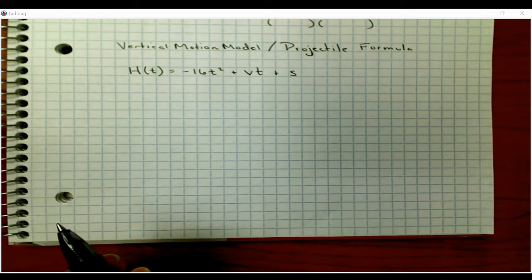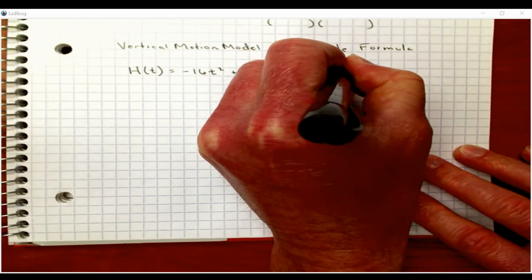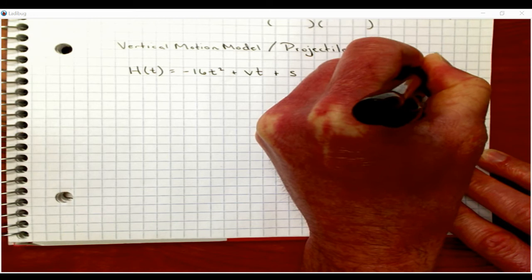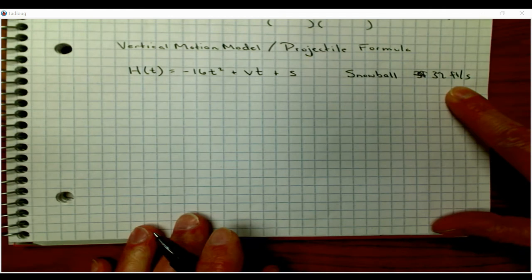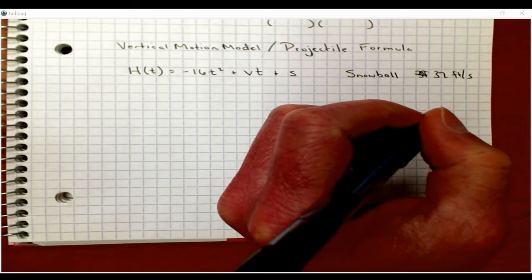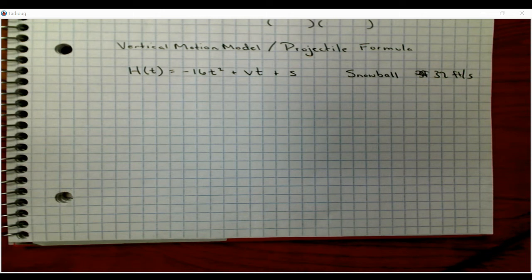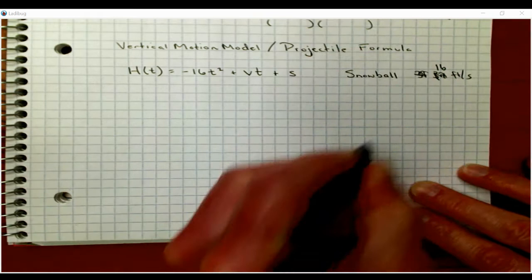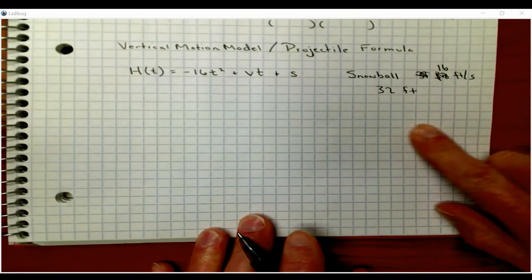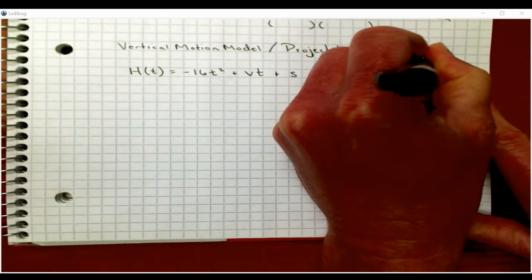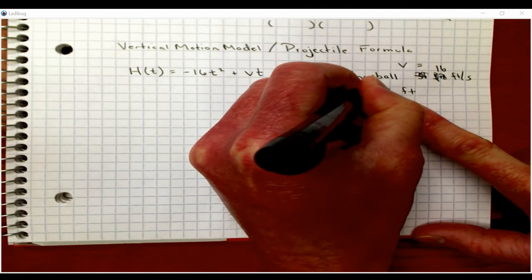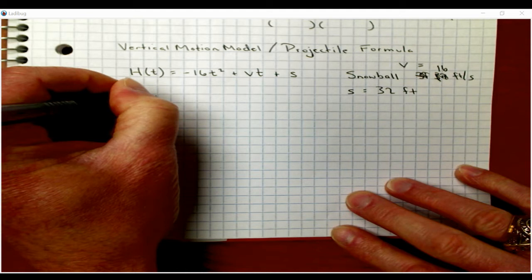We're going to look at an example of a snowball being thrown at 32 feet per second as the initial velocity. Actually, let's change it. We're going to do 16 feet per second thrown at a height of 32 feet off the ground. When you have the initial velocity, this is our v value equals 16 feet per second, and then we have our s, or some people put an h. We're just going to plug these in, so negative 16t squared plus 16t plus 32.